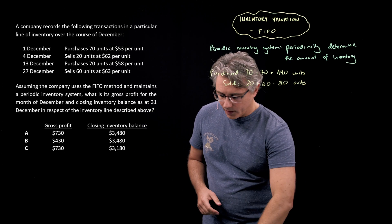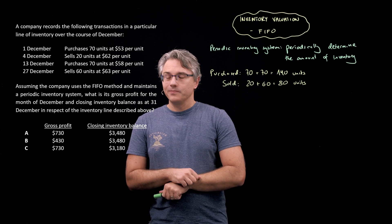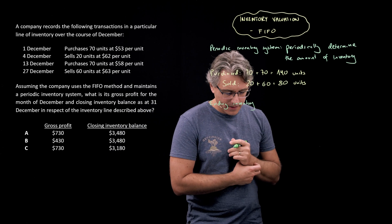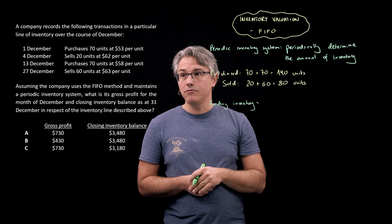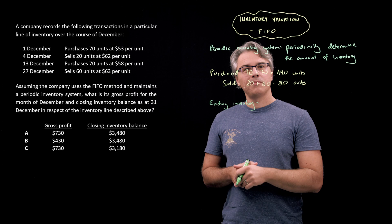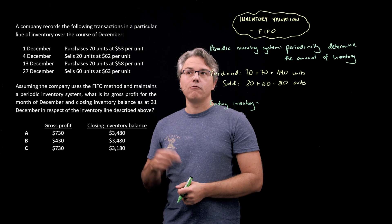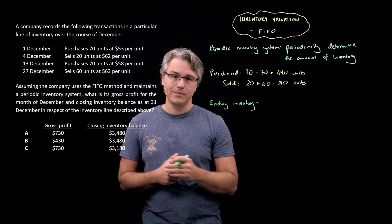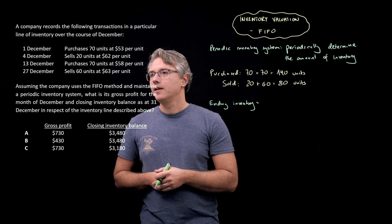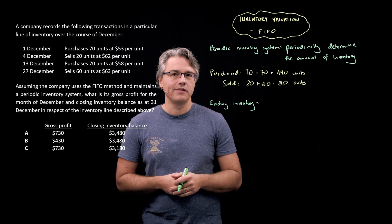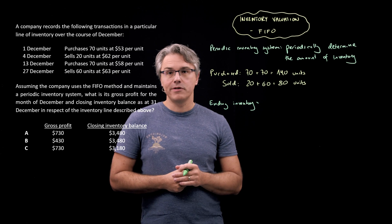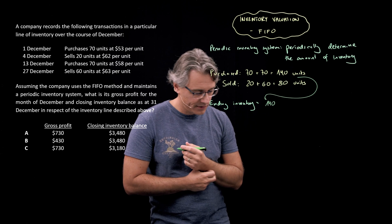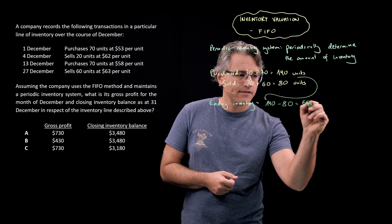Now I'm going to calculate the ending or closing inventory. Ending inventory is the difference between what was purchased and what was sold. You might ask what if the company had some units already in inventory to start with — if that were the case, the examiner would have given you that information. Since they haven't, you must assume that starting inventory at the beginning of the month was nil. So ending inventory is 140 units purchased minus 80 units sold, which gives 60 units.